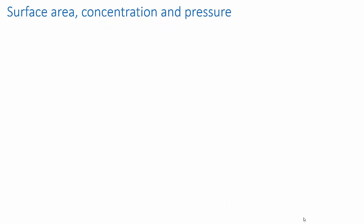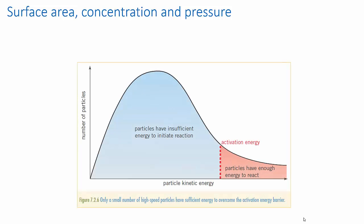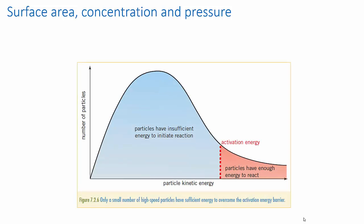Firstly let's look at surface area, concentration and pressure. We're going to bundle these together because they essentially work in the same way. Take our hypothetical flask of reactants and their Maxwell-Boltzmann distribution. Have a look at the y-axis of this graph. This is the number of particles.